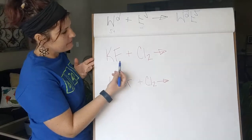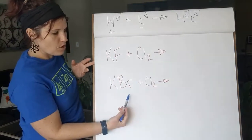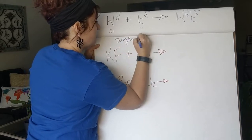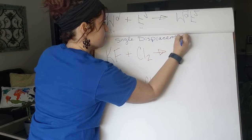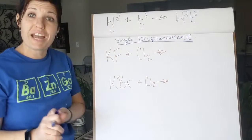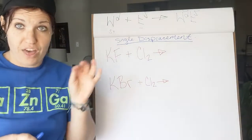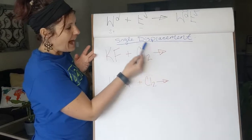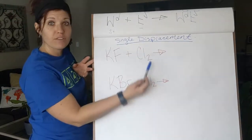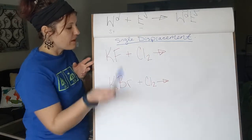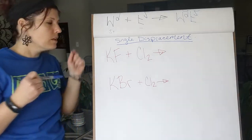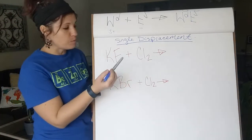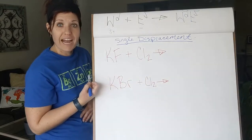Here we have potassium fluoride plus chlorine, and potassium bromide plus chlorine. These are both single displacement reactions. The way I recognize single displacement is because we have a compound plus an element as reactants. The only way a reaction will occur is if the outer element — in this case chlorine — is more reactive than whatever it's going to kick out of the compound.